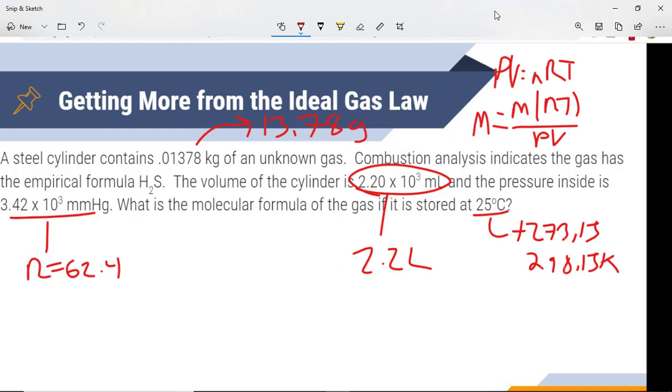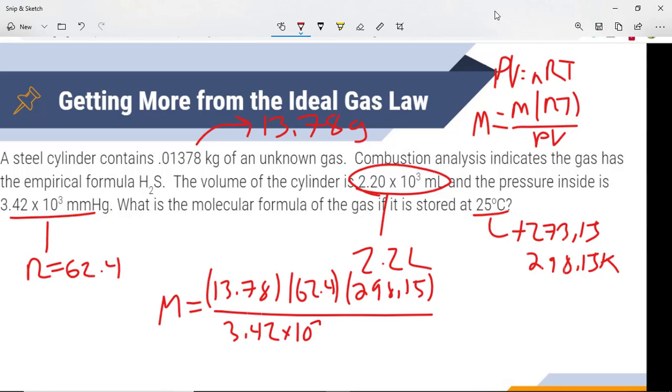So now that we have everything that we need, we just need to plug into the formula up above and solve. So our molar mass is going to equal grams, so 13.78, times R, 62.4, times T, 298.15, divided by our pressure P, which is 3.42 times 10 to the third, times our volume, 2.2 liters. We plug in and solve, and we get our molecular molar mass. So our molecular molar mass is 34.07 grams per mole.